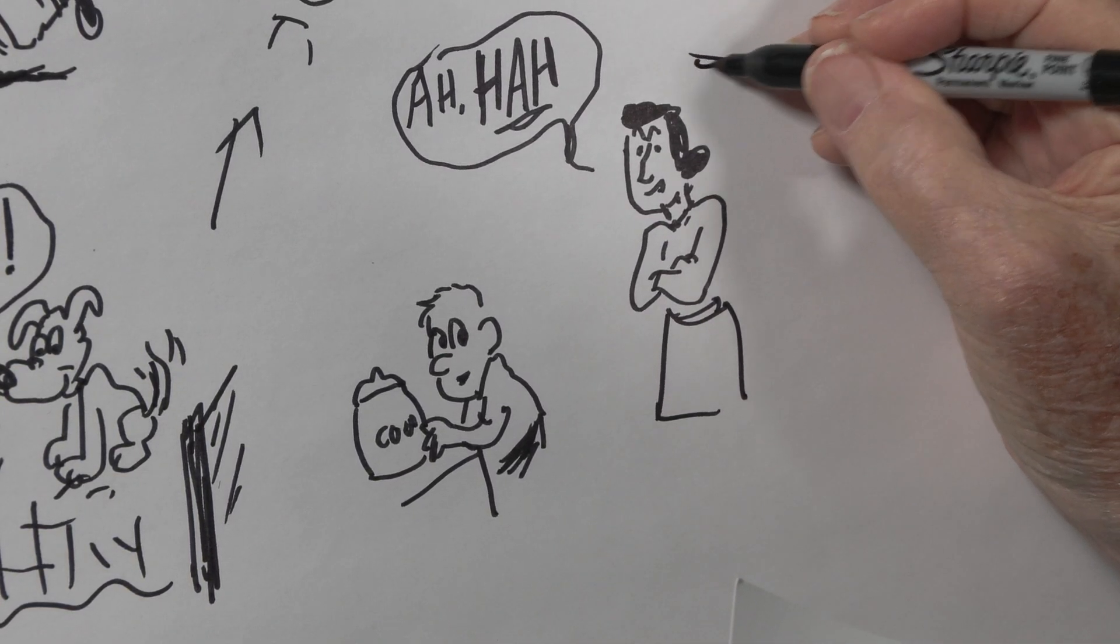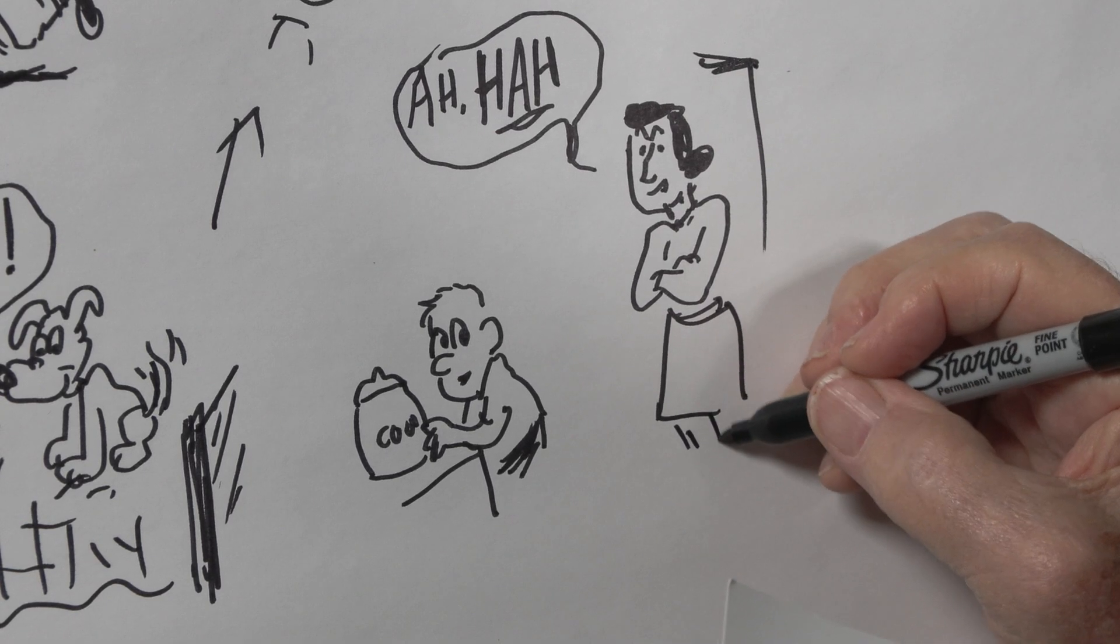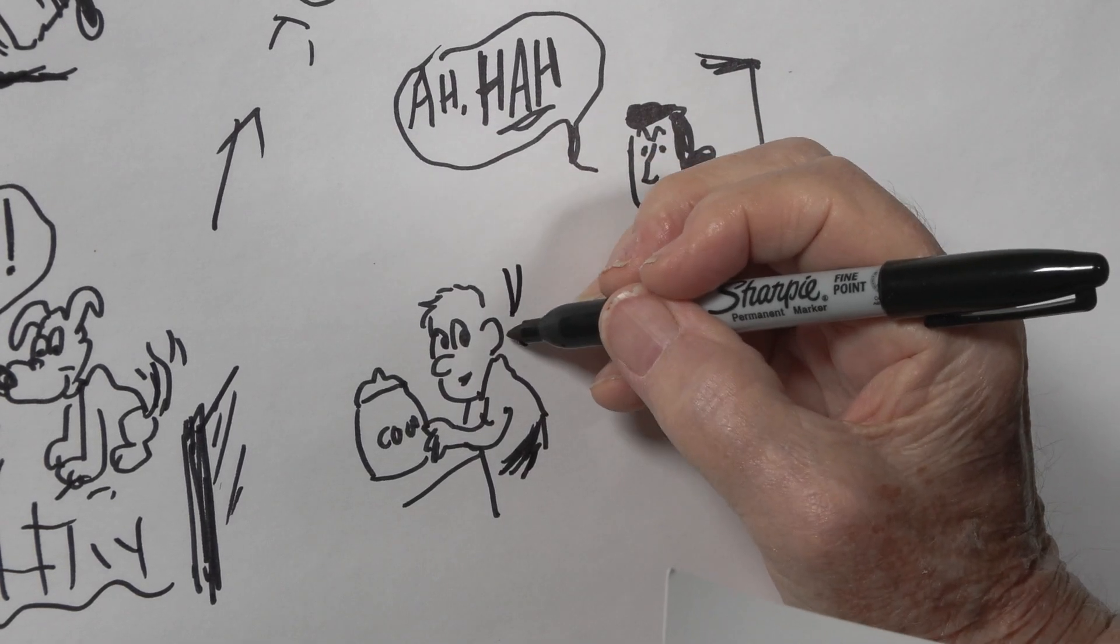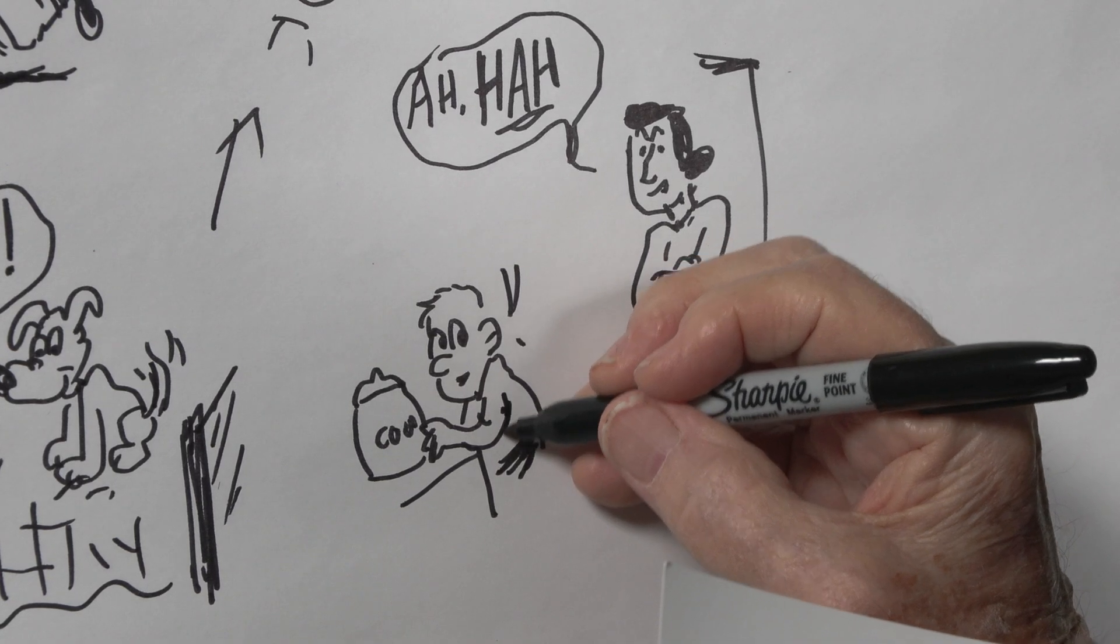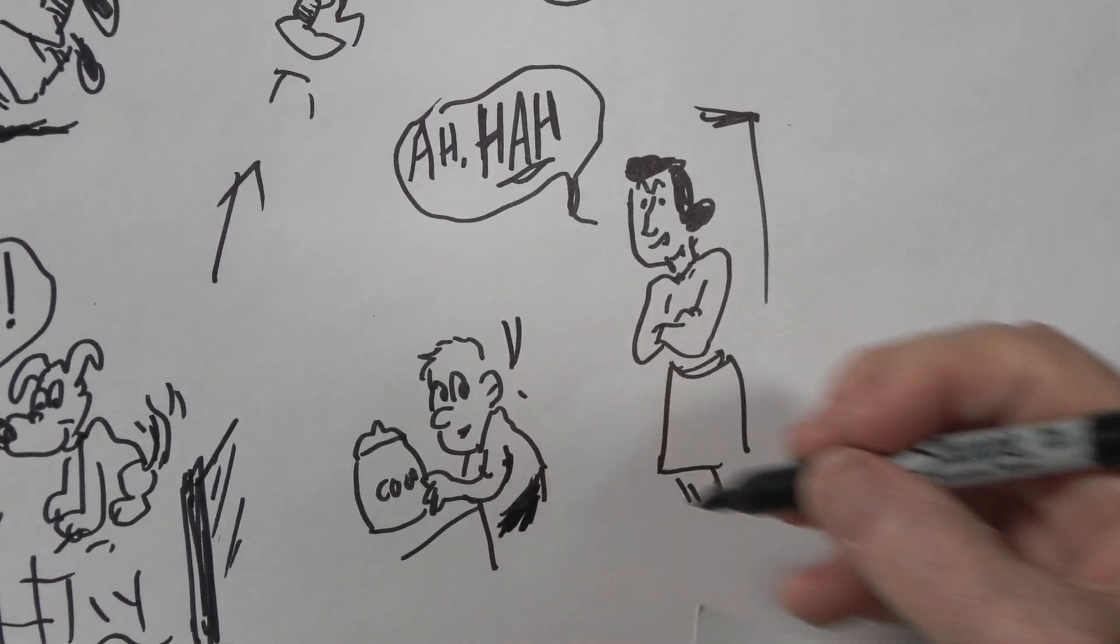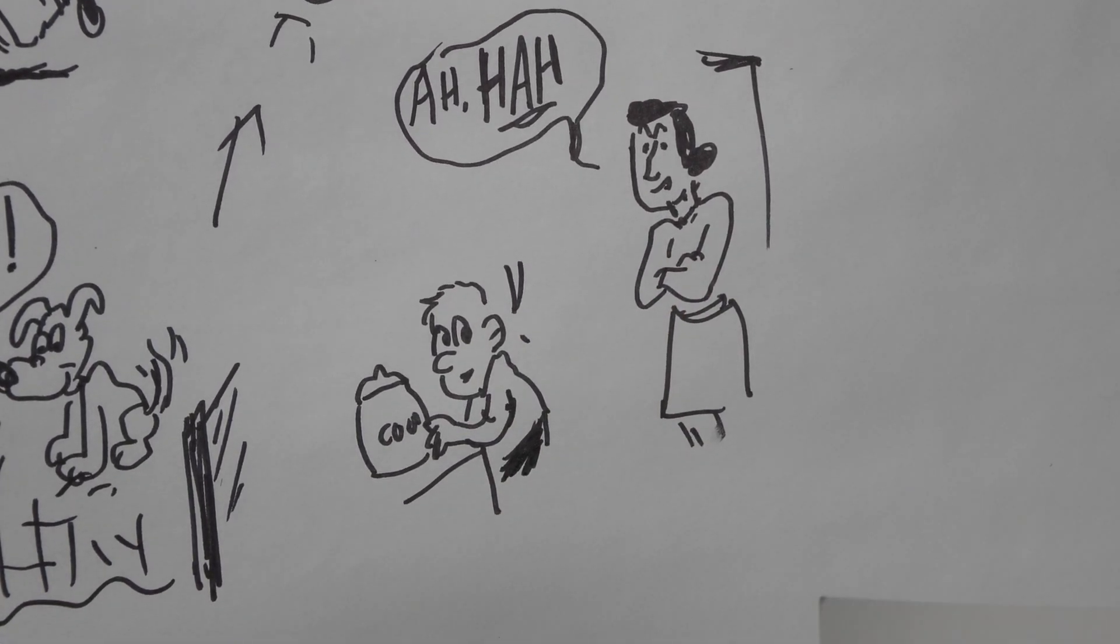She's not going to swat him or anything, but she's letting him know that she's on to his tricks, you might say. And she just came into the kitchen real quietly. And of course, Junior here, he got caught red-handed, you might say.